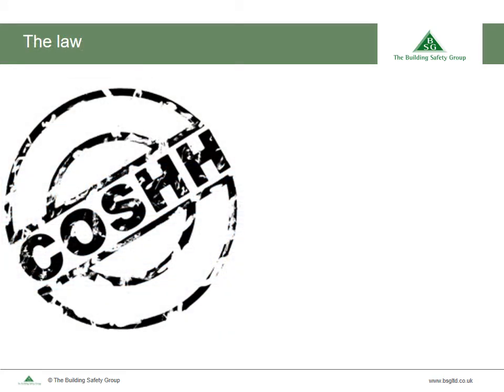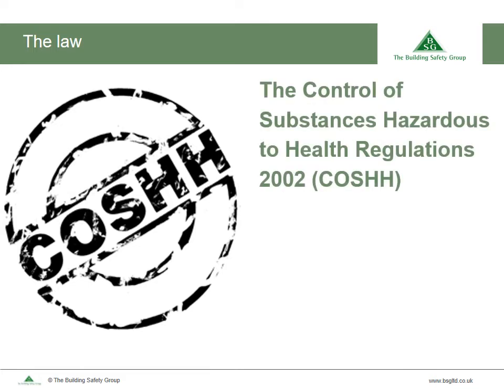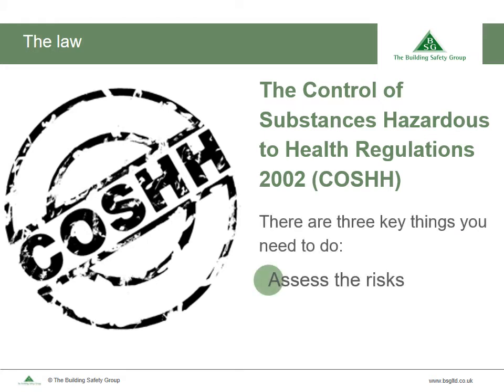On legislation — the rules and regulations that control the risk from dust — we have the Control of Substances Hazardous to Health Regulations 2002, as dust is a substance that is hazardous to health. These regulations cover activities which may expose workers to construction dust. There are three key things you need to do: assess the risk, control the risk, and review the controls.